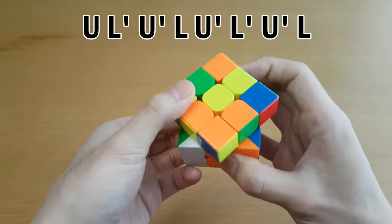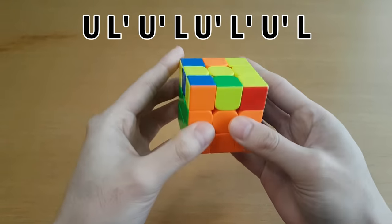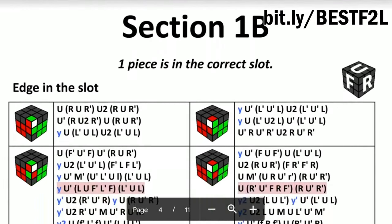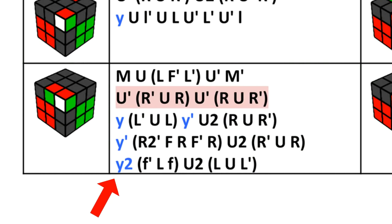Instead, you could solve it like this. This sheet has a good way to solve every F2L case in zero or one cube rotations. And no, the rotation at the start does not count. That is just showing you which side you started facing the case from.